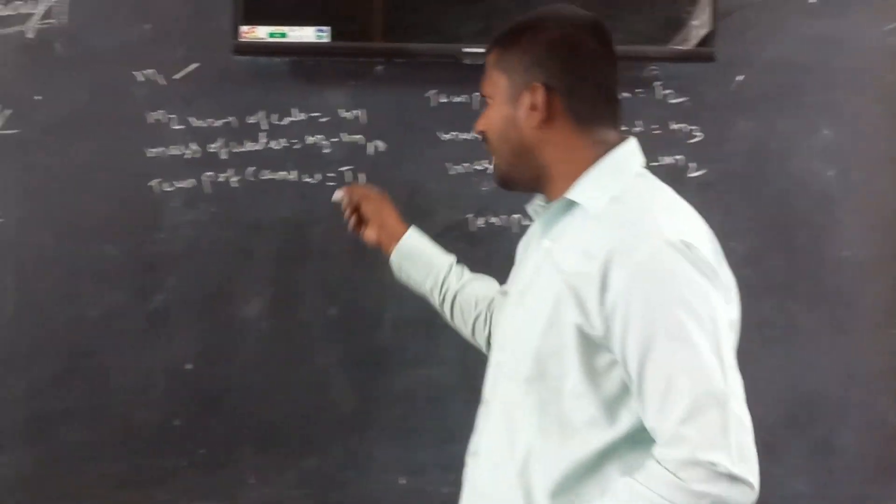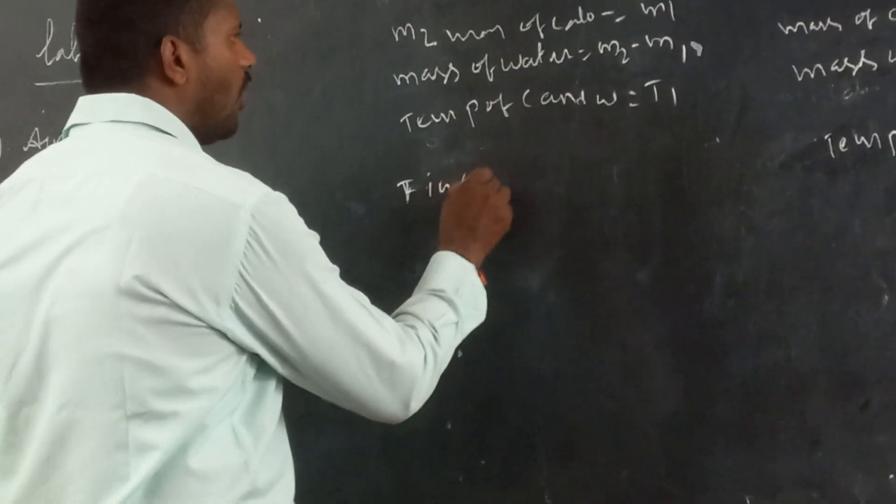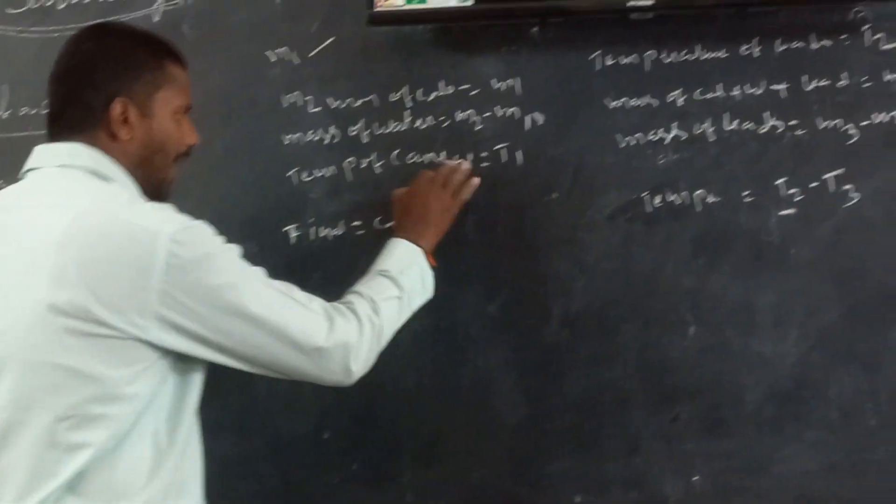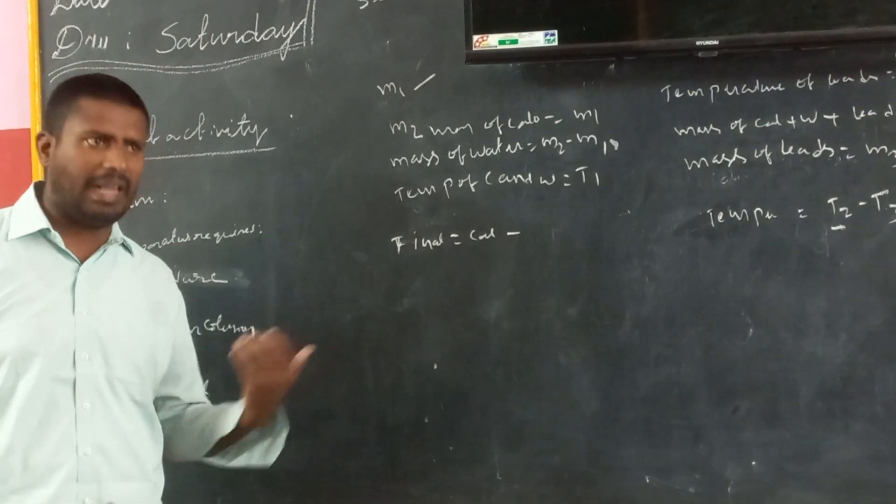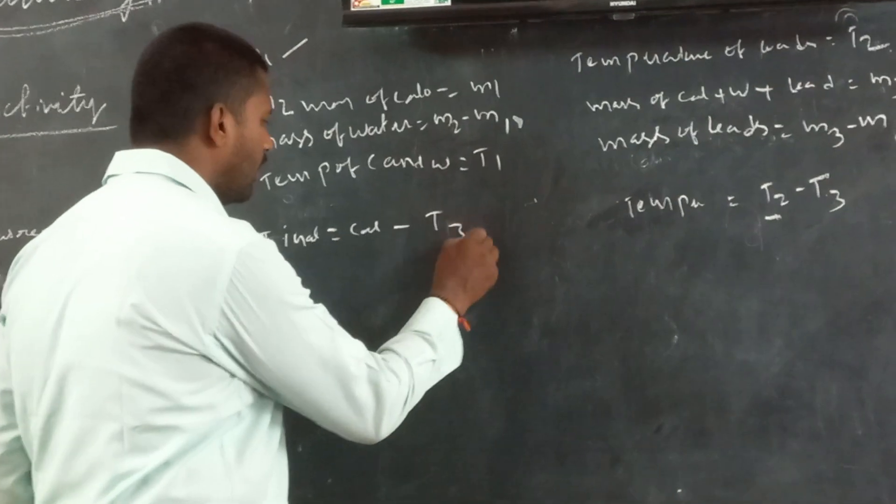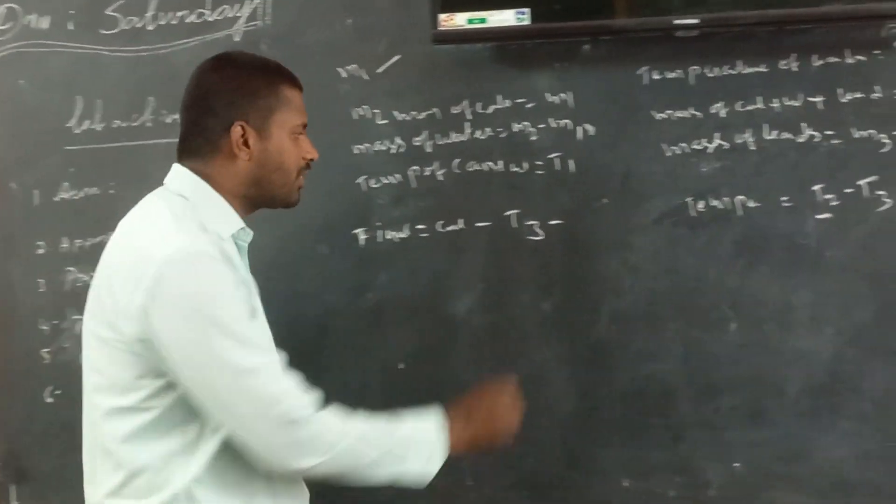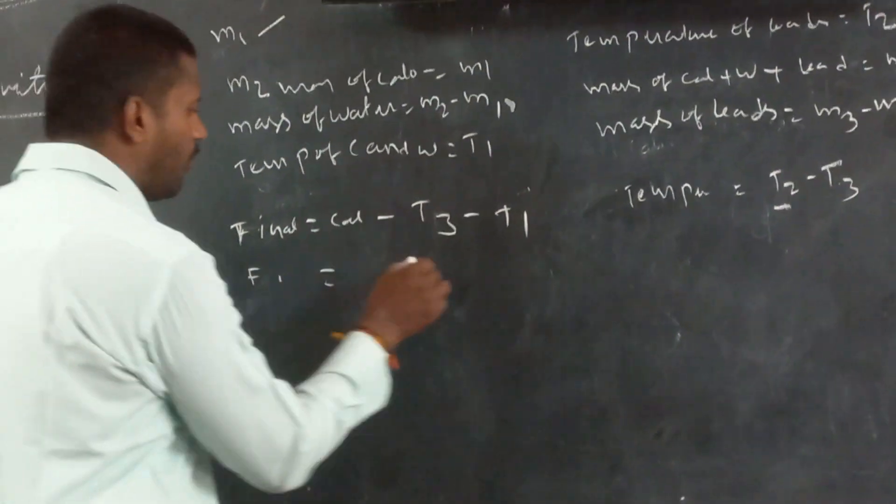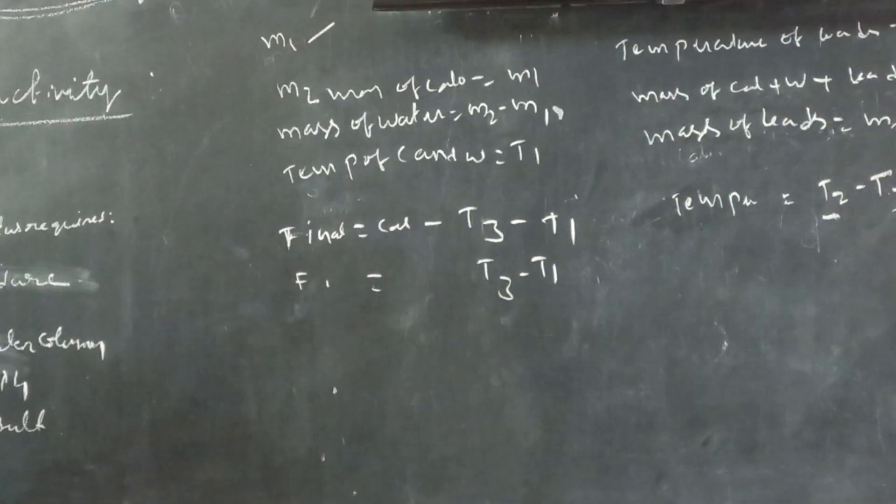Let us find out the final temperature of water and calorimeter. The final temperature of calorimeter is, the highest temperature is T3. When the lead shots transferred to the calorimeter, the final temperature is T3. And, initial temperature of calorimeter, what is T1? T3 minus T1. And, what about the final temperature of water is T3 minus T1?